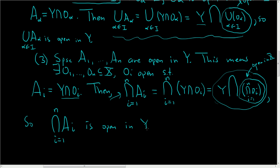And that's it — we've shown it's a topological space. When you have these three conditions, you say that Y is a subspace of X. This is called the subspace topology or the induced topology on Y.